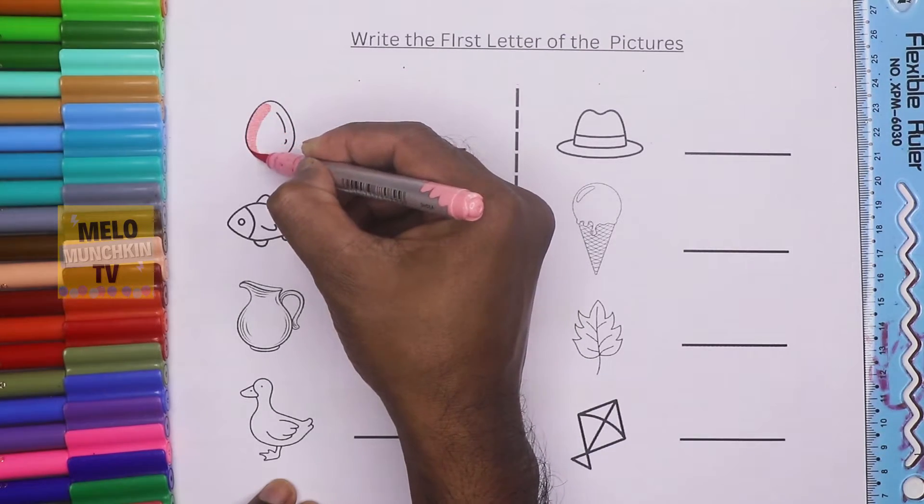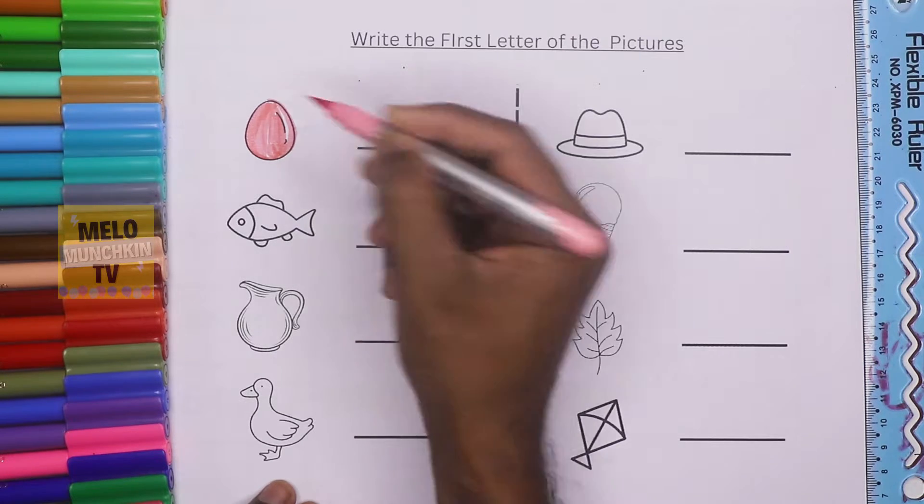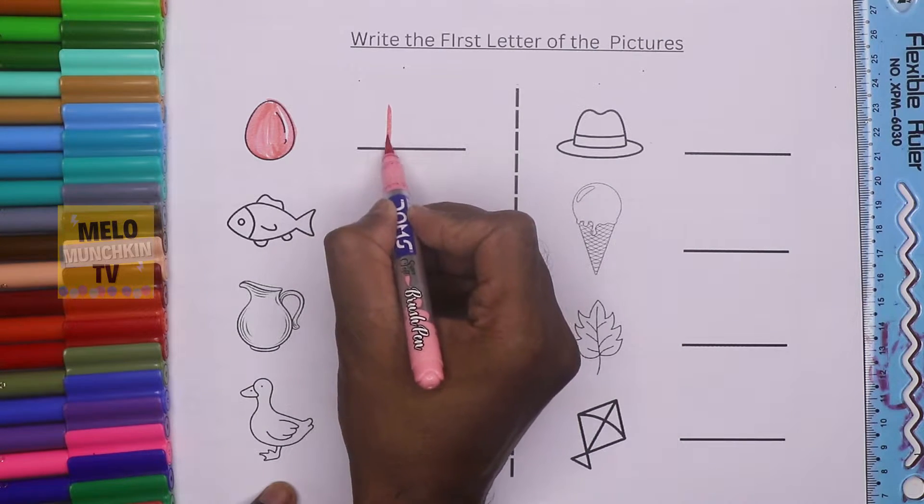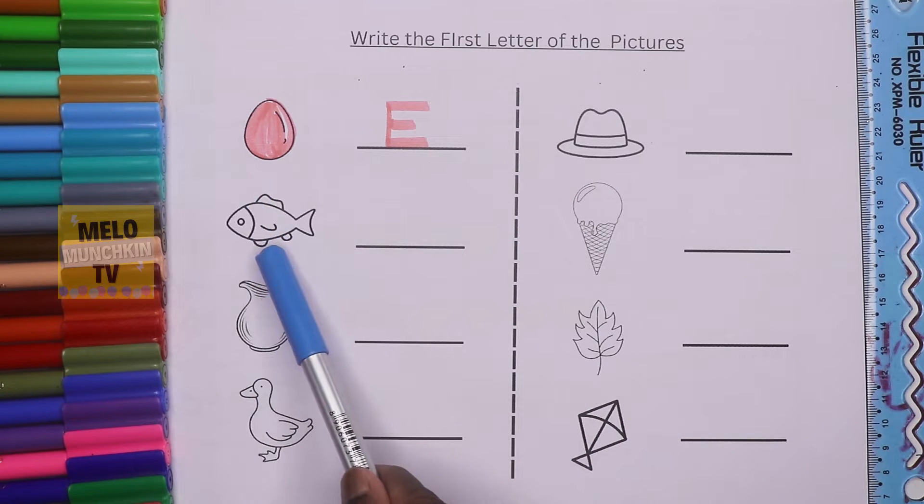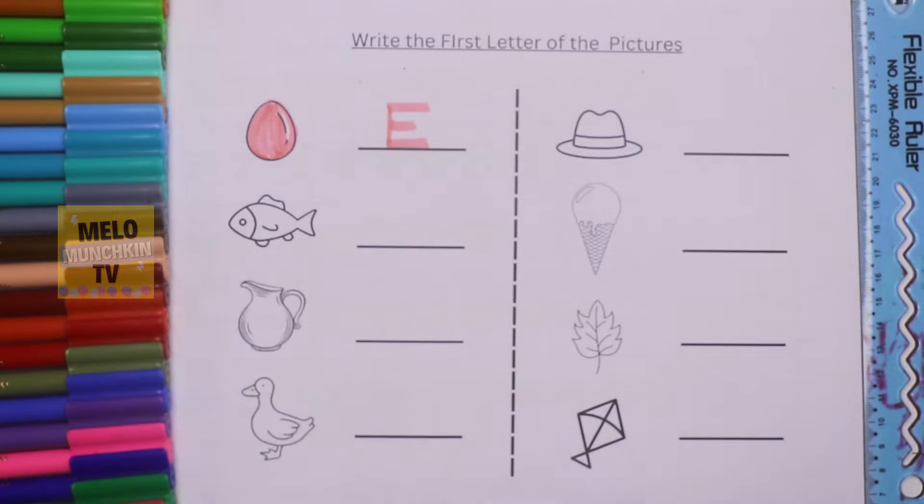Next one is fish, and I'm using blue color. Let's color blue, and the first letter is F. Fish, F for fish, E for egg.